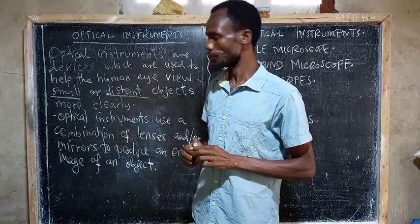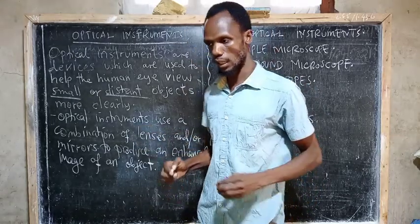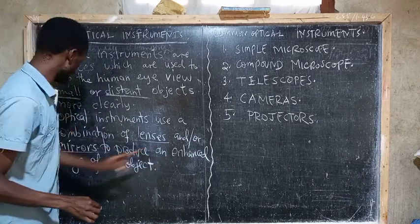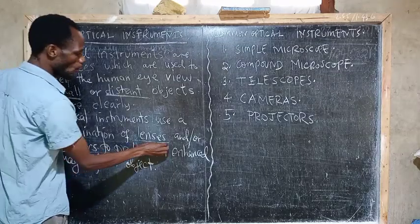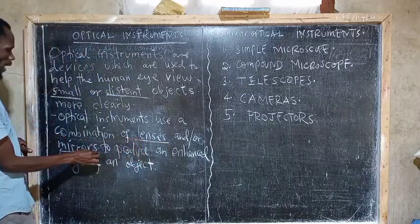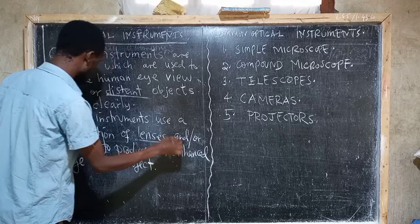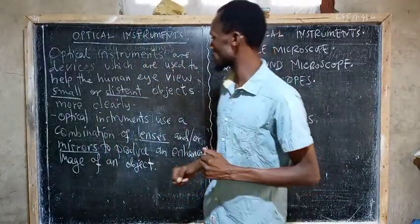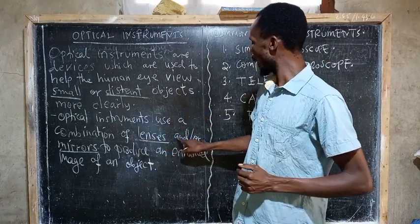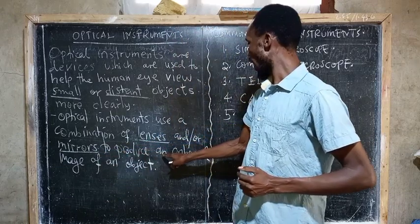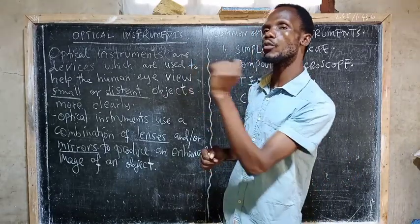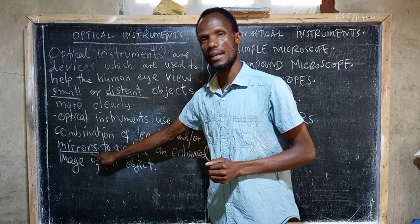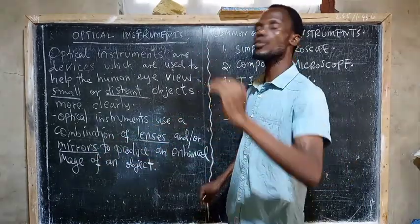That is all about optical instruments. These optical instruments use a combination of lenses and mirrors to produce an enhanced image of an object. They can use a combination of lenses, mirrors, or both lenses and mirrors together to form what we call an optical instrument. It is only possible to view those distant objects and small objects if there is a combination of lenses and mirrors, or only a mirror or only a lens.